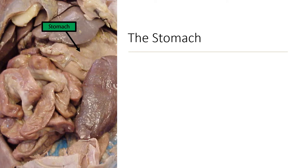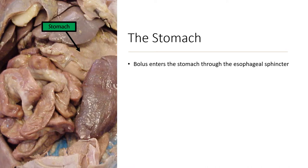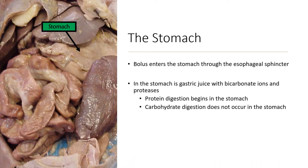The bolus has passed through the esophagus via peristalsis and enters the stomach through the esophageal sphincter. In the stomach is gastric juice with bicarbonate ions and proteases — a protease is an enzyme involved in protein digestion. So protein digestion begins in the stomach; carbohydrate digestion does not occur in the stomach because the acidity actually denatures the amylase enzyme.